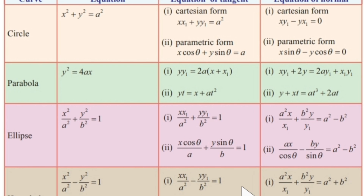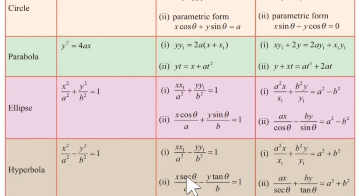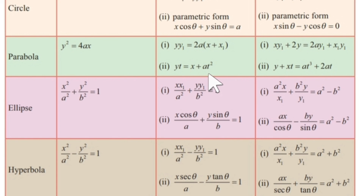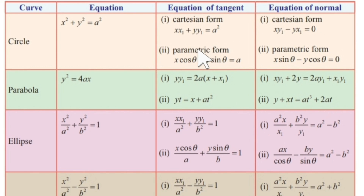Similarly for the hyperbola, the equation of the tangent has the same structure but with minus instead of plus. For the parametric form, replace x1 by a sec theta and y1 by b tan theta, since any point on the hyperbola is of the form a sec theta, b tan theta. To get the Cartesian form of the tangent, replace x square by x x1, y square by y y1, x by x plus x1 by 2, and y by y plus y1 by 2. To get the parametric form, substitute the parametric coordinates of the point.